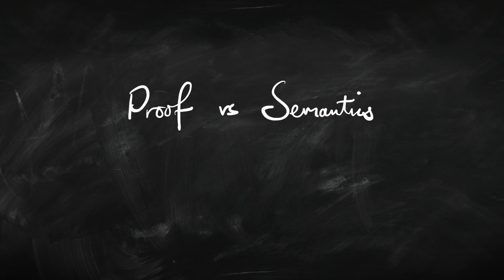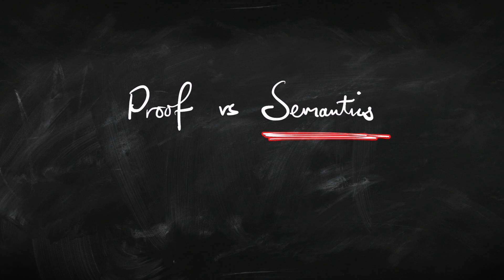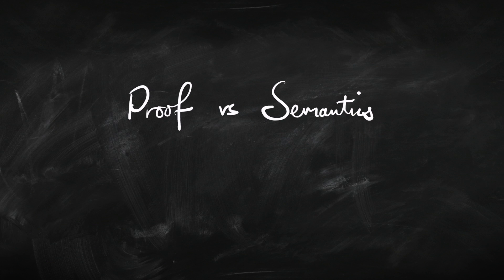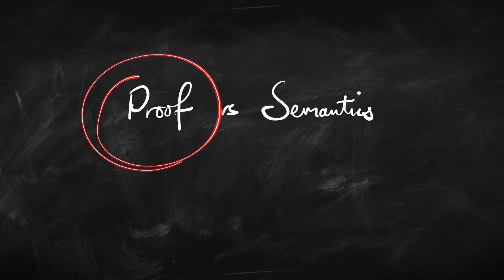I want to make the distinction between proof on the one hand and semantics on the other. Semantics is when we are talking about truth and meaning. So whenever we're doing a truth table in propositional logic, we're doing semantics. Truth is over on this side, and we're going to contrast that with proof over on this side.